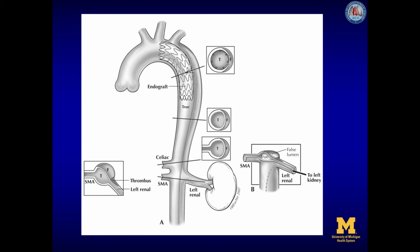After stent graft deployment, balloon dilation to profile can only be performed at the proximal landing zone. We have been somewhat reluctant to do this for fear of tearing the already inflamed aorta. Completion aortography demonstrates accurate deployment and elimination of flow through the entry tear. IVUS examination of the remaining non-treated aorta confirms resolution of dynamic obstruction, as shown in section A. However, the left renal artery demonstrates static obstruction, and this is confirmed by obtaining pressure gradients from the aorta to the renal hilum in the renal artery true lumen, as shown in section B.